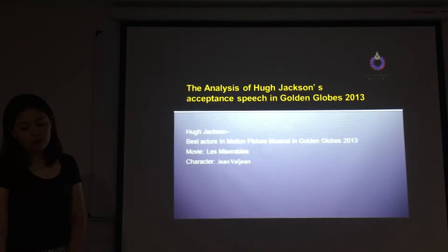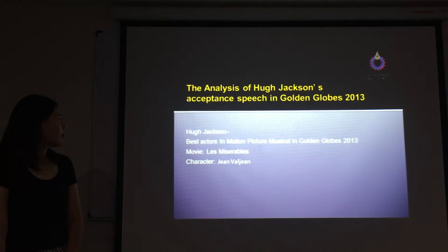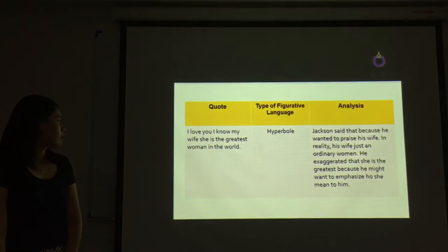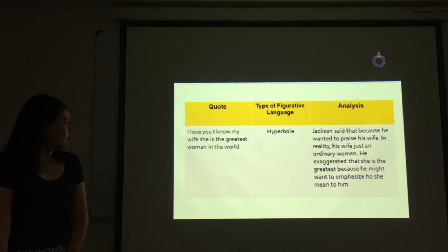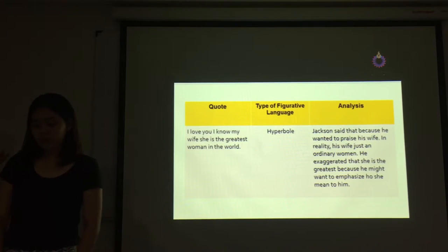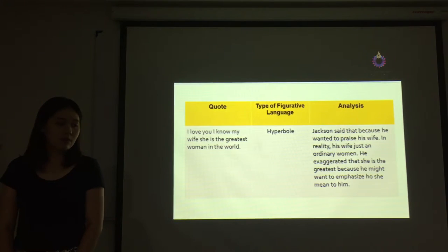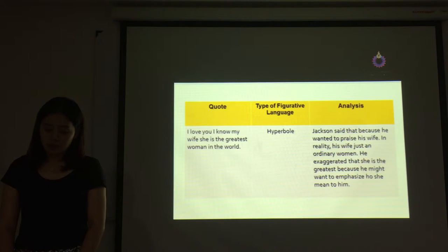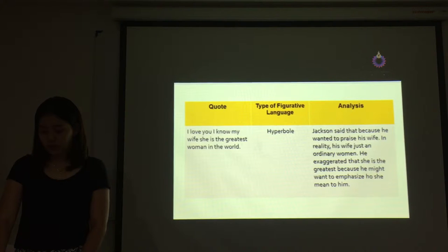Hugh Jackman accepted his speech in the Golden Globe 2013 as best actor for Les Misérables, playing the character Jean Valjean. He said, 'I love you. I know my wife — she is the greatest woman in the world.' Jackman said this because he wants to praise his wife. In reality, his wife is an ordinary woman, but he exaggerates that she is the greatest because he wants to emphasize how much she means to him.